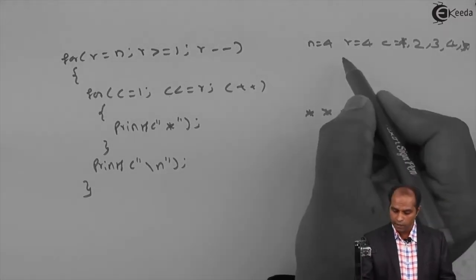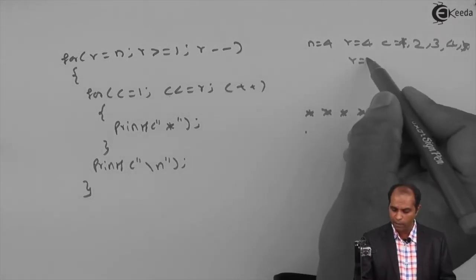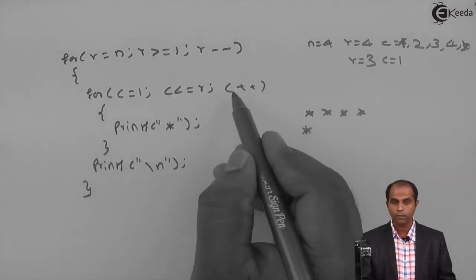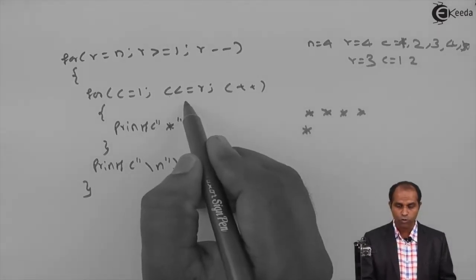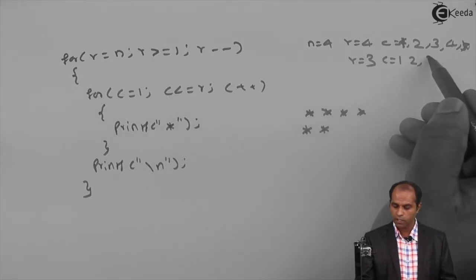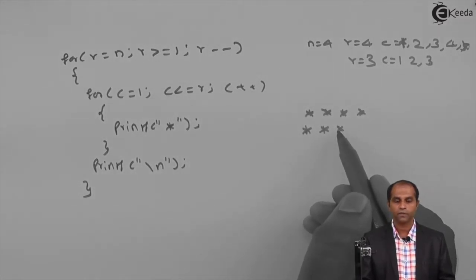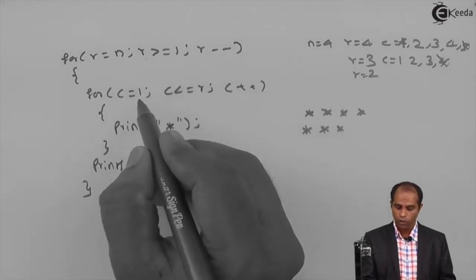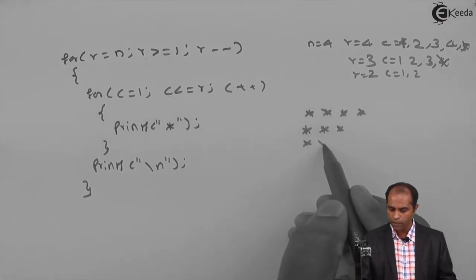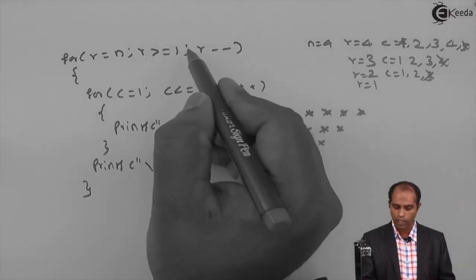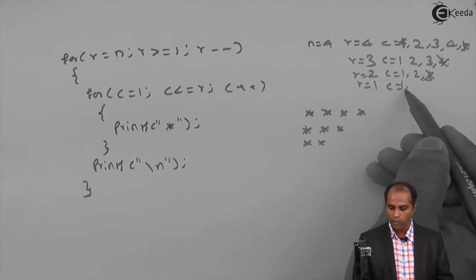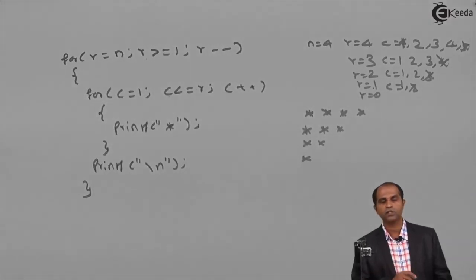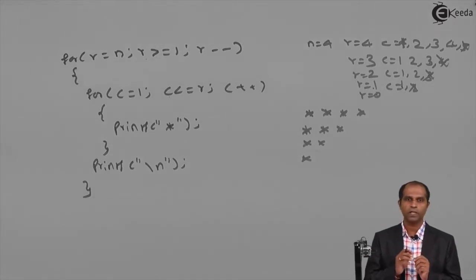After printing the newline, R becomes 3. C starts at 1 again; 1 less than equals 3 — print asterisk. C becomes 2, true — print asterisk. C becomes 3, true — print asterisk. C becomes 4 — stop. So three asterisks. Then R becomes 2, printing 2 asterisks. Then R is 1, printing 1 asterisk. R becomes 0; 0 greater than equals 1 is false — stop.